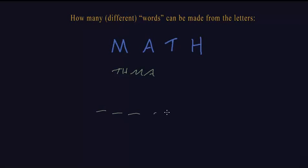So with four letters, we draw in four blanks. How many ways can a letter be put into the first place? There are four different letters. For example, we can choose A.